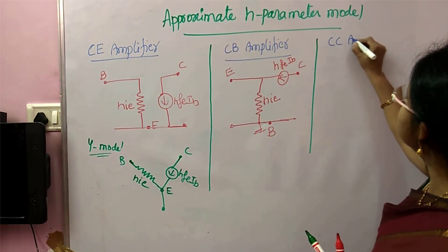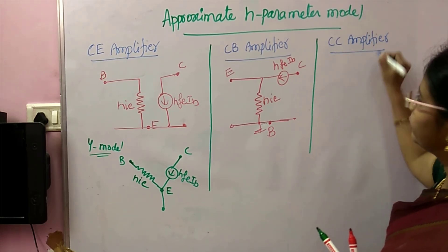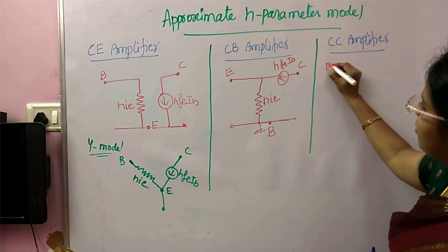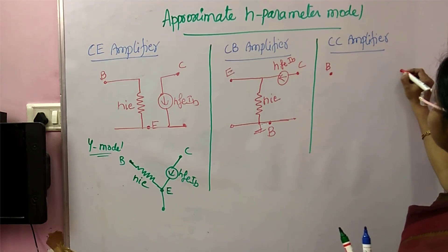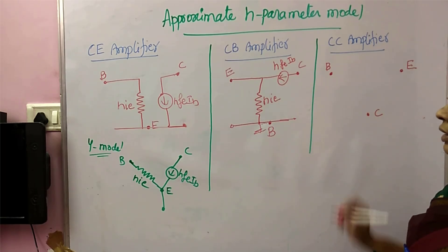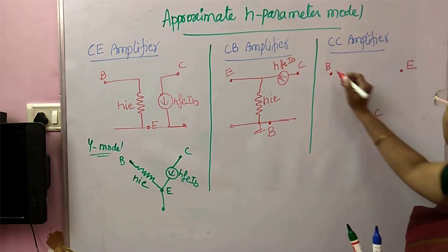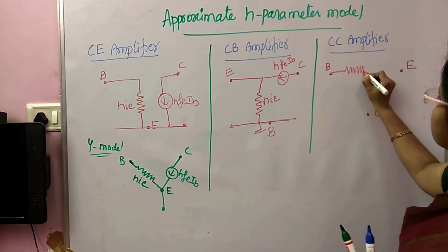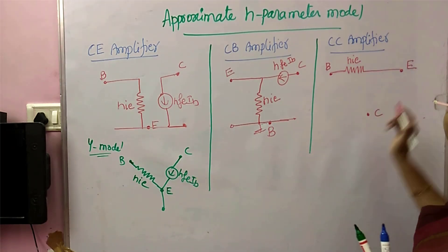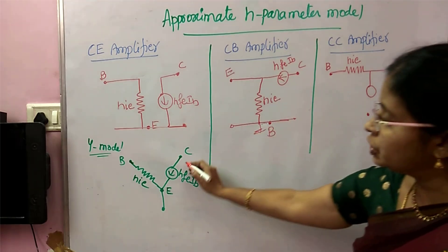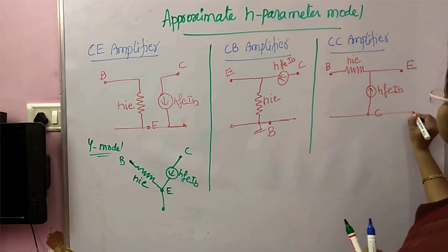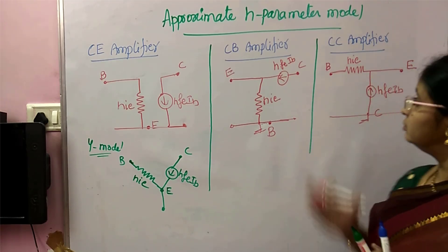For the CC amplifier, the input terminal is the base, the output is the emitter, and the ground is the collector. Again applying the same two points: between base and emitter we draw HIE, and between collector and emitter we draw the current source HFE·IB directed toward the emitter. With the collector grounded, this is the approximate h-parameter model for the CC amplifier.